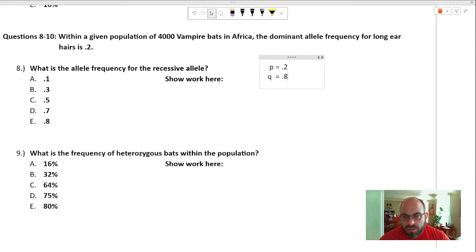What is the allele frequency for the recessive allele? It's .8, E. What is the frequency of heterozygous bats in the population? .2 times .8 times 2, .32. B is the correct answer.